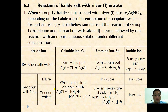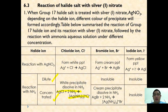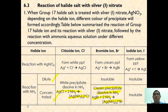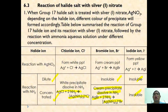Silver chloride can dissolve in both dilute and concentrated ammonia. Silver bromide can only dissolve in concentrated ammonia aqueous solutions, and the precipitate remains insoluble when treated with dilute ammonia. Silver iodide is insoluble regardless of whether the ammonia is concentrated or dilute.